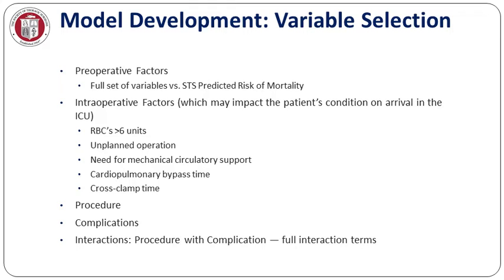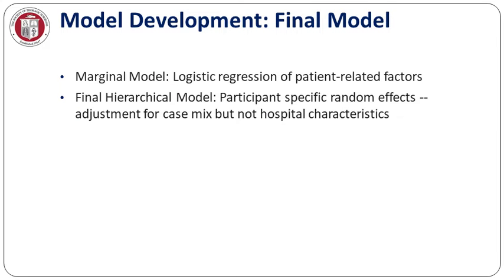Added to this were all of the operations and all of the potential interactions between operation in a single model. Notably added were intraoperative factors such as excessive or large amount of red blood cells, unplanned operation, need for circulatory support, prolonged cardiopulmonary bypass, and cross clamp times, as these were felt to be intraoperative factors indicative of serious risk for mortality following surgery. The final model followed the hierarchical approach of previous STS models, accounting for specific hospital case mix, but notably not accounting for hospital-specific variables such as volume or teaching institution status, because the purpose of this model was to distinguish performance across institutions.